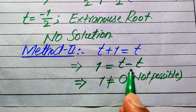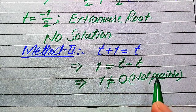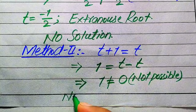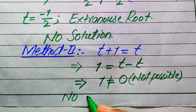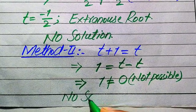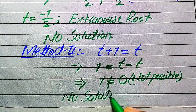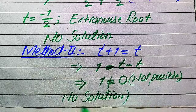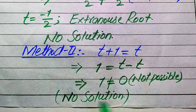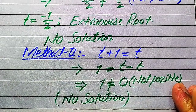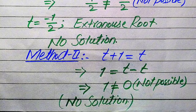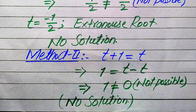So it means we cannot get any value of t which satisfies our given question statement. We finally conclude that this question has no solution because we cannot get any value of t. This is our final answer. Thank you so much for watching this video. Please subscribe to my channel for more exciting videos.